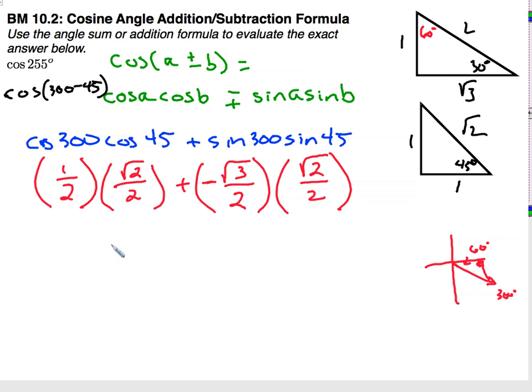Okay, multiplying those, square root of 2 over 4, plus a negative square root of 6 over 4, combines to square root of 2 minus square root of 6, all over 4.